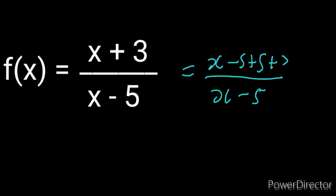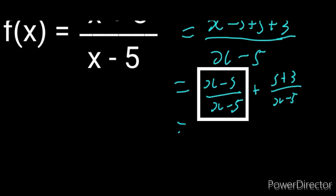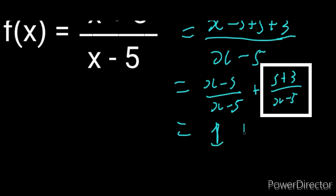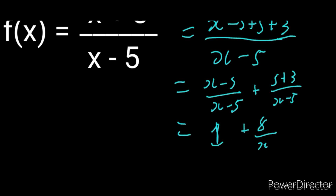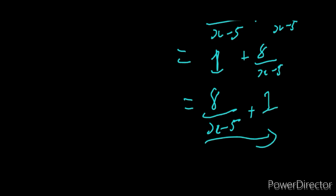Then we're going to have plus 3. Once we have this, we can split the fraction. When we split the fraction, this will become x minus 5 over x minus 5, then plus 5 plus 3 over x minus 5. From here, this is going to become 1, and then this is going to become 8 over x minus 5. We already have the standard form of the hyperbola, so this is going to be 8 over x minus 5 plus 1. And then we have it.